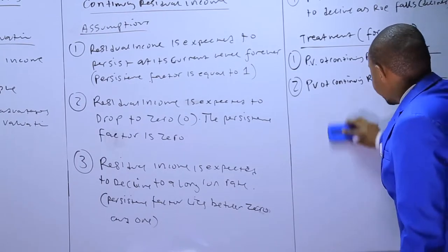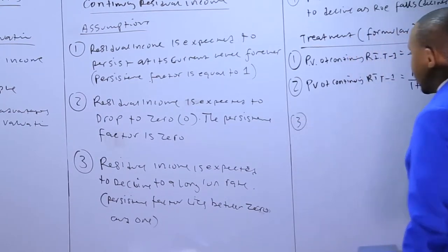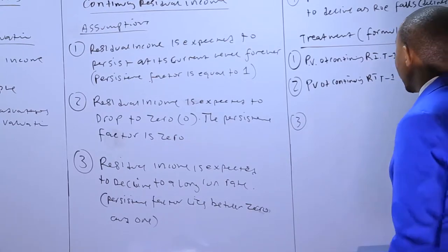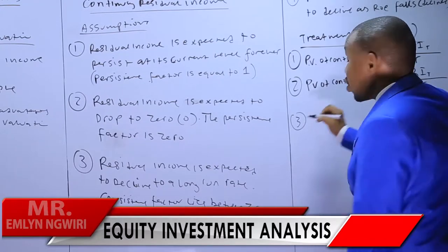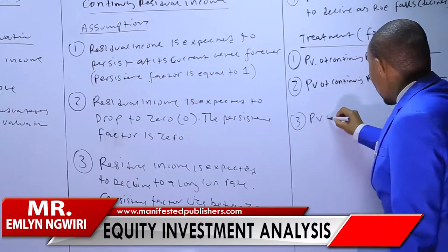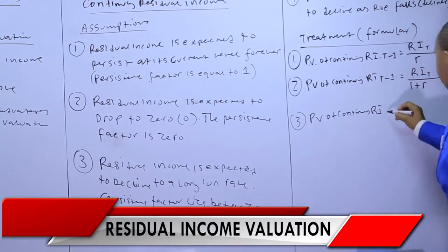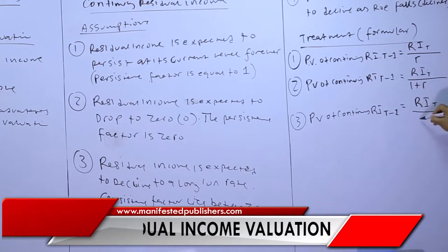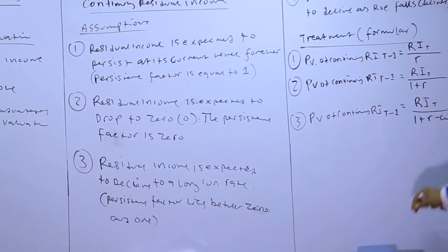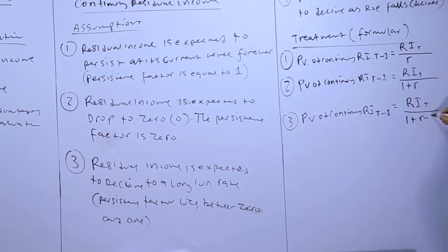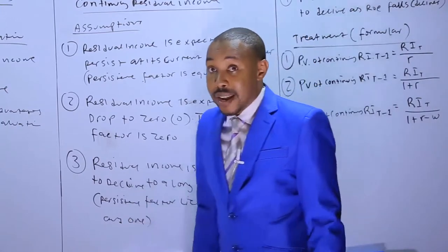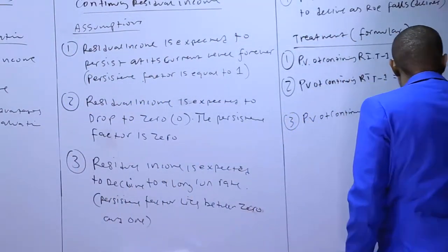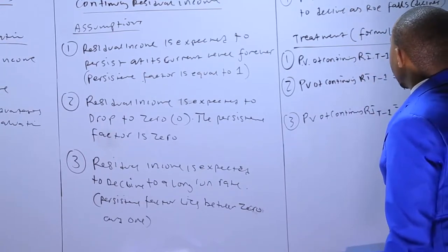Assumption three: the residual income is expected to decline to a long-run rate and the persistence factor w lies between zero and one. We can now input the persistence factor component. The present value of continuing RI at time t minus one equals RI_t divided by one plus r minus w. The persistence factor could be given as 0.6 or 0.8, so we include that component accordingly.